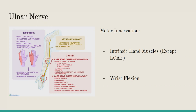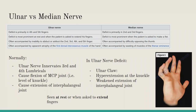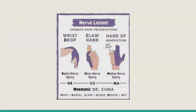The ulnar nerve innervates the rest of the intrinsic hand muscles and is also involved in wrist flexion. LOAF is an acronym standing for lumbricals, opponens, abductor pollicis brevis, and flexor pollicis brevis - these are the median nerve-innervated thenar muscles. The ulnar nerve innervates all other intrinsic hand muscles.